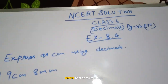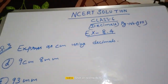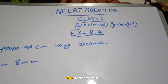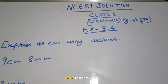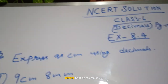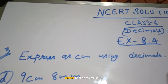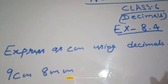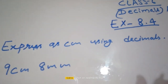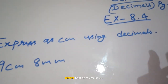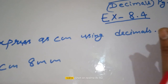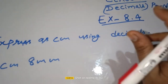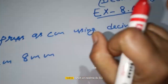Hello everyone, welcome to my channel Dipti Diperma. We are doing NCRT solution class 6 decimals, page 177, exercise 8.4, question number 3. We have almost done three parts. Now we will solve the two remaining parts, D and E.